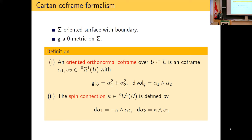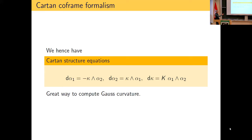There's a third one-form in the picture, and the beautiful fact is that if you take the differential of that new one-form κ, it equals the Gauss curvature times the volume form. You can actually take this as the definition of Gauss curvature — in my opinion much simpler than what you learn in typical curves-and-surfaces courses. So we have three structure equations: dα₁ and dα₂ define the spin connection, and the third structure equation defines the Gauss curvature.